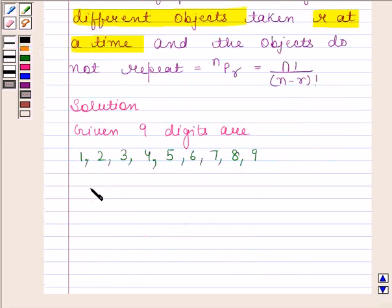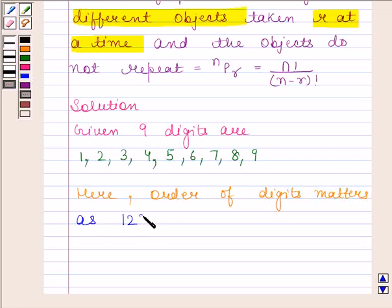You should know that here order of digits matters, as 123 and 321 are different numbers.